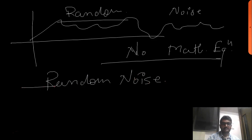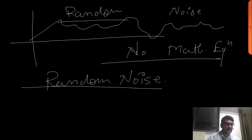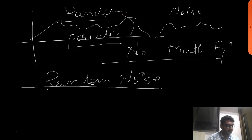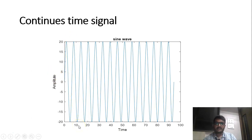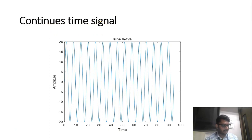We cannot determine the pattern of a random signal. A very interesting point is that a random signal cannot be a periodic signal, and also a periodic signal cannot be a random signal. Now we will see what is the meaning of continuous time. You had seen this waveform many times — this is known as a continuous time signal.